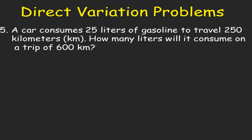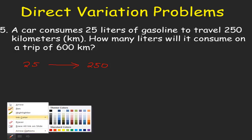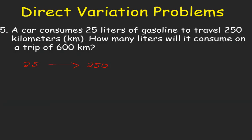Problem number 5. A car consumes 25 liters of gasoline to travel 250 kilometers. How many liters will it consume on a trip of 600 kilometers? On the first sentence, we have 25 liters to 250 kilometers. So 25 is to 250. Our equation for direct variation will be 25 is equal to the constant of proportionality k multiplied by 250.